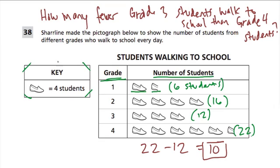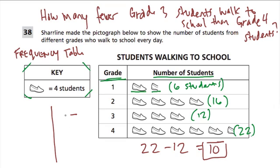The second thing they usually ask is to create or complete a frequency table — or they'll call it a table depending on when they're asking the question. That means it's usually a two-column table where you write the grade and a title, so something like 'students walking.'